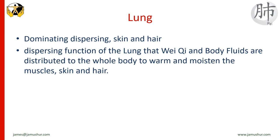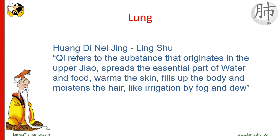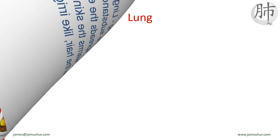Dispersing here means distributing. It is by the dispersing function of the lungs that wei qi, or protective qi, and body fluids are distributed to the whole body to warm and moisten the muscles, skin, and hair. In the thirteenth chapter of the Lingshu, the Miraculous Pivot, Huangdi says: 'Qi refers to the substance that originates in the upper jiao, spreads the essential part of water and food, warms the skin, fills up the body, and moistens the hair — like irrigation by fog and dew.'